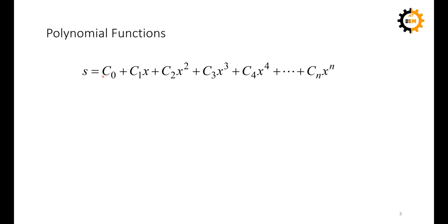A polynomial function looks like a sum of terms where x is the independent variable with its power increasing from 0 to n, and c₀, c₁, c₂, c₃ are the constant coefficients. Here we use s to represent displacement, since we are estimating the displacement for a cam design. Based on design requirements, you can define the displacement for a given cam profile, and the SVAG diagram will behave according to this polynomial.